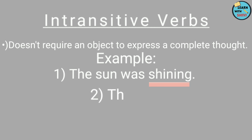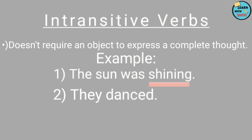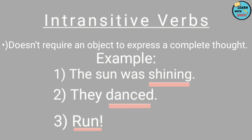Now let's read the second sentence together: 'They danced.' What is the verb here? 'Danced.' Does it have an object? No. But is it a meaningful sentence? Yes. Hence, 'danced' is an intransitive verb. Similarly, in the third sentence, only the verb is written — no other object or subject. But is it still making a meaningful sentence in itself? Yes. Hence, 'run' becomes our intransitive verb.